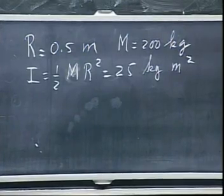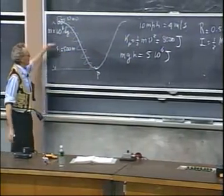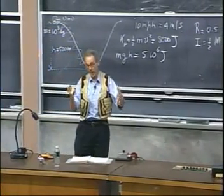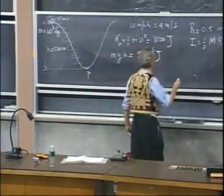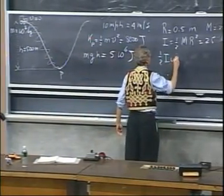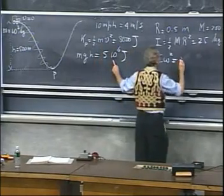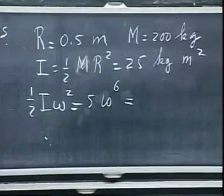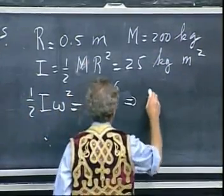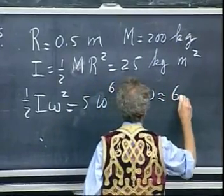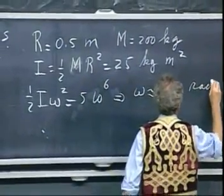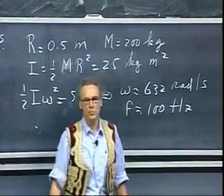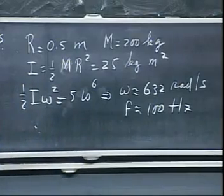Now, what we would like to do is convert all this gravitational potential energy into kinetic energy of that disk. If you think of a clever way that you can couple that, then you would like one-half I omega squared to be five times ten to the six joules. That tells you what omega should be for that disk. You find that omega is about 632 radians per second, so the frequency of the disk is hundred hertz, hundred revolutions per second. I don't think that is particularly extravagant.